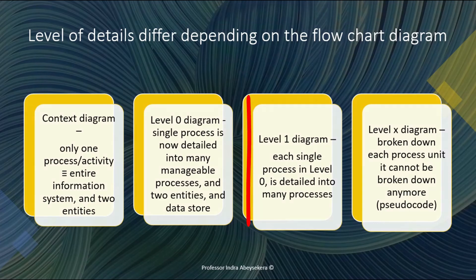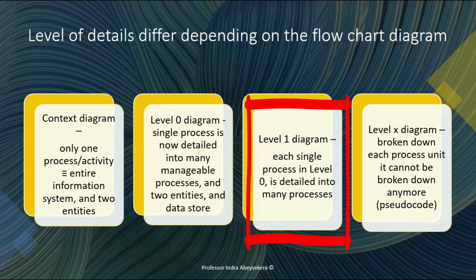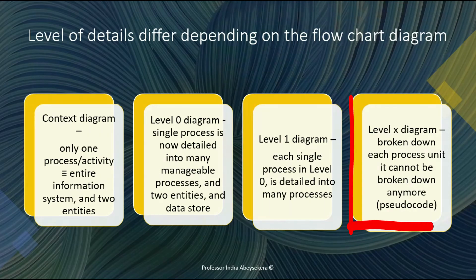In the level one diagram, which is the next level of detail, we take each process identified in the level zero diagram. We can go on to level one, level two, level three, and so forth, until each process is broken down into sub-processes and each sub-process is broken down into details where there is no more detail to be broken down.